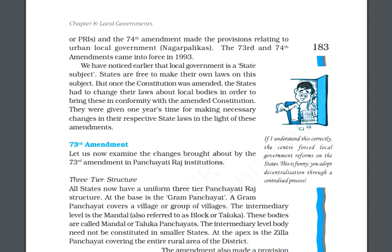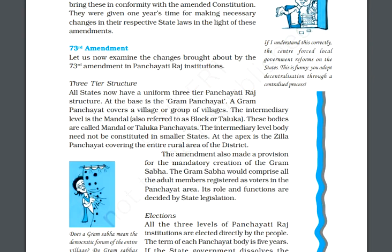Let us start with the 73rd amendment. What were the major changes that came under this 73rd amendment? The first change that was brought under this 73rd amendment was the three-tier system.